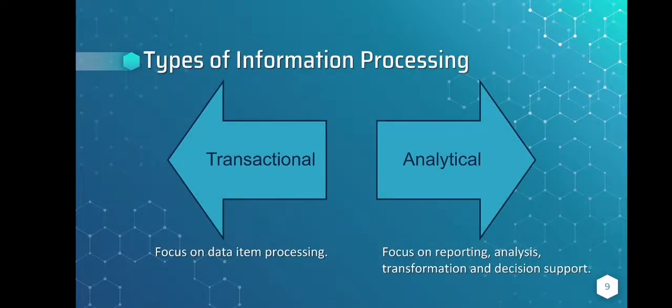There are two types of information processing: transactional and analytical. Transactional information processing focuses on data item processing, while analytical information processing focuses on reporting, analysis, transformation, and decision support.